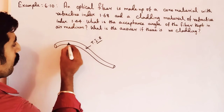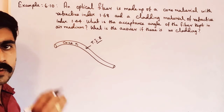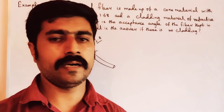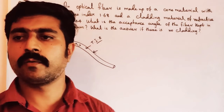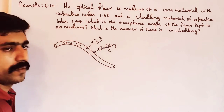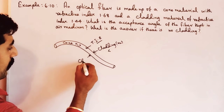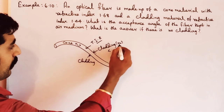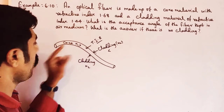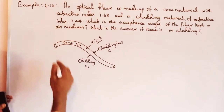The core has refractive index n1, which is greater than the outer layer — the cladding. The cladding refractive index is n2, which is less. So the core refractive index is greater than the cladding refractive index, and this condition causes total internal reflection.